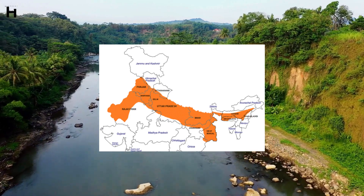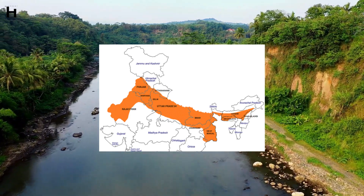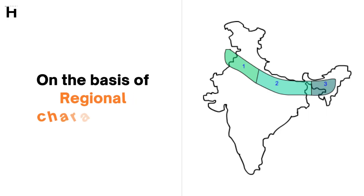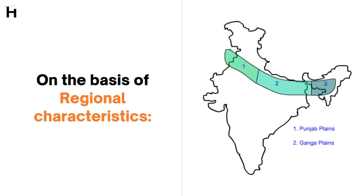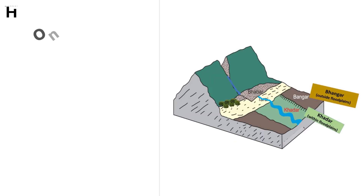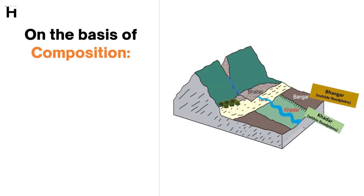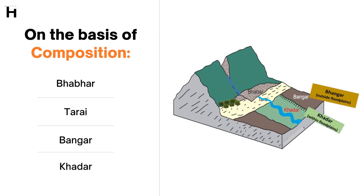The Plains of India are categorized in two ways. Based on original characteristics: Plains of River Indus, also known as Punjab Plains, Gangetic Plains, and Plains of River Brahmaputra. On the basis of composition, the Riverine Plains of India are divided into the Bhabbar, Tarai, Bangar, and Khadar.